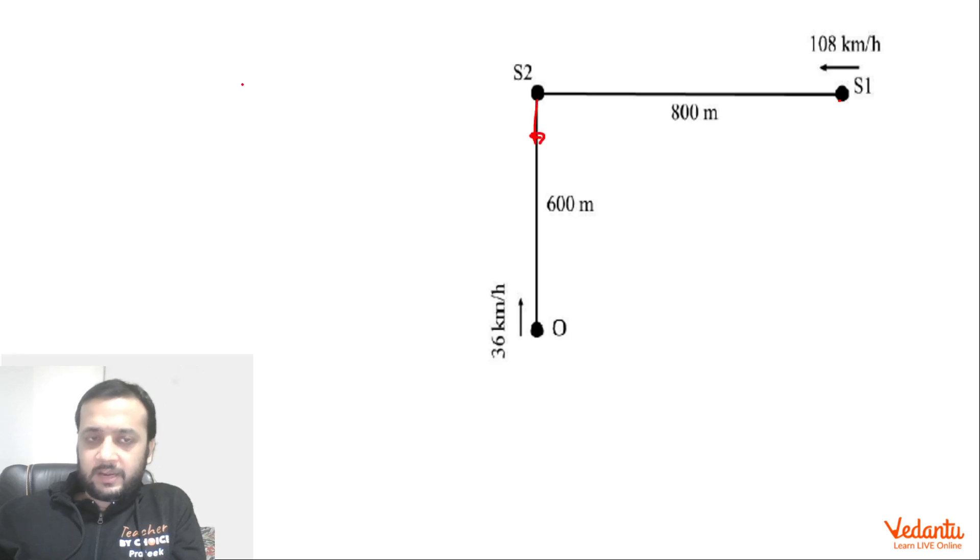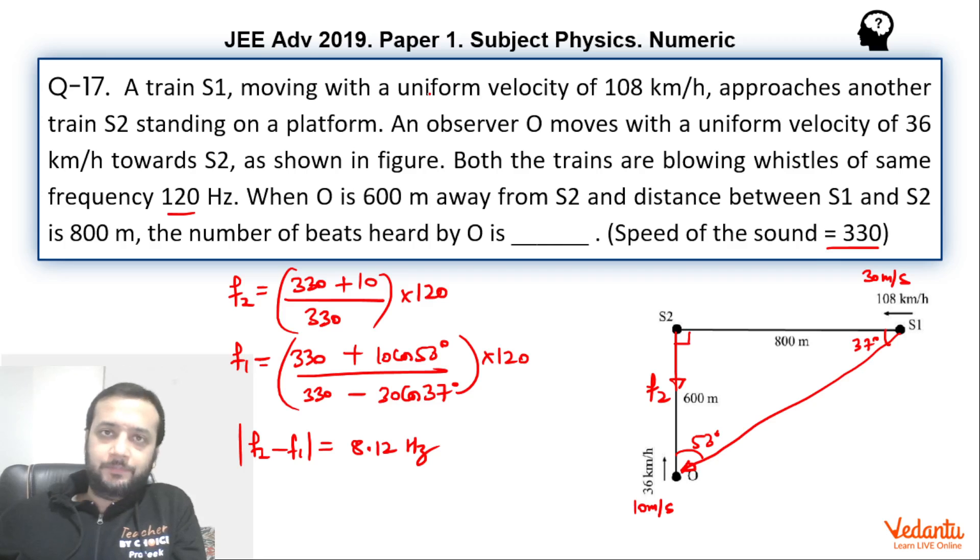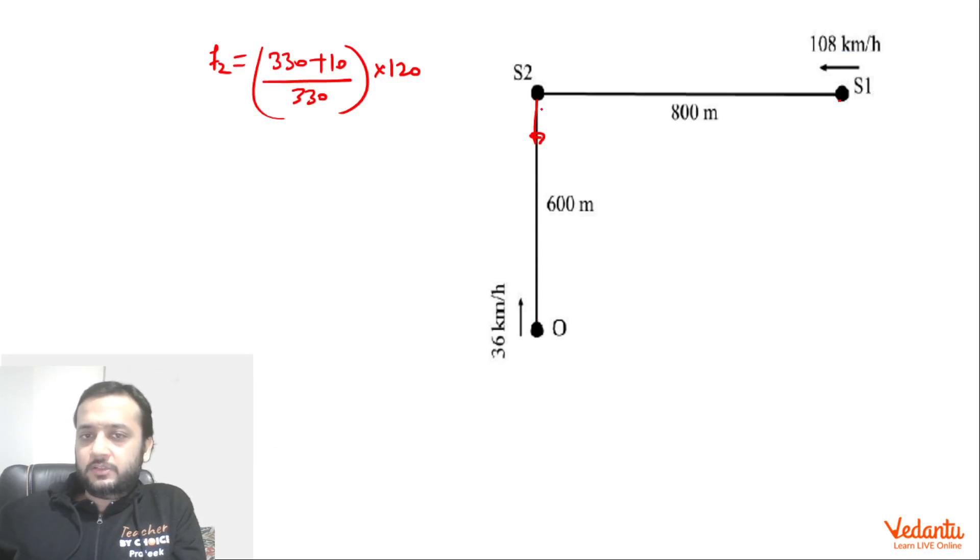Before that, this value is not going to change. F2 will remain same because if observer moves, it doesn't matter what amount of time the sound takes to reach the observer. Relative velocity of the observer is not changing with respect to the sound and hence we can say F2 is going to remain the same. So F2 is going to be again 330 plus 10 divided by 330 multiplied by 120. Because observer is going to move in the same direction. So whatever is the after, no matter after how much time the sound reaches, you are going to write the same expression.